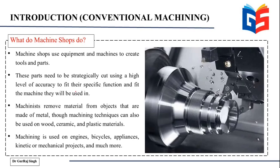It is very important to have a very high level of accuracy, and that is provided using these machining processes. The machinists remove material from objects made of metal, but machining can also be used on wood, ceramic, and plastic materials. Certain applications of machining include automobile parts like engines, bicycles, appliances, and other kinetic or mechanical objects — there are infinite applications of machining in the industry.